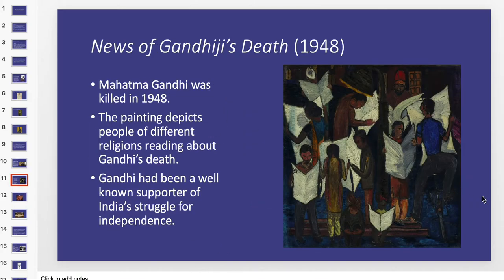This painting, 'News of Gandhiji's Death' — which could also be translated as 'News of Gandhi's Death' — was painted in 1948. The painting depicts people of different religions reading about and learning about Gandhi's death. Gandhi had been a well-known supporter of India's struggle for independence, so this is the artist paying tribute to Gandhi. We can see that the people are of different genders, wearing different styles of clothing, but they're all united in reading the news. At a time when news didn't travel as fast as today, reading the newspaper was a key way for people to gain knowledge and be in on the same world events.